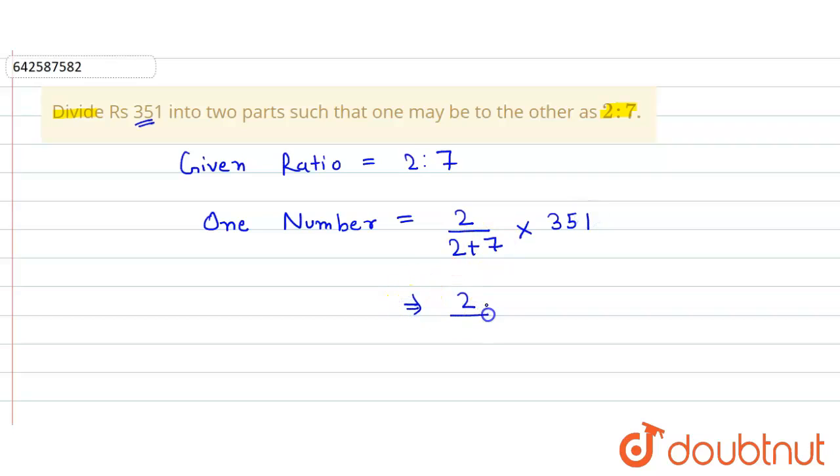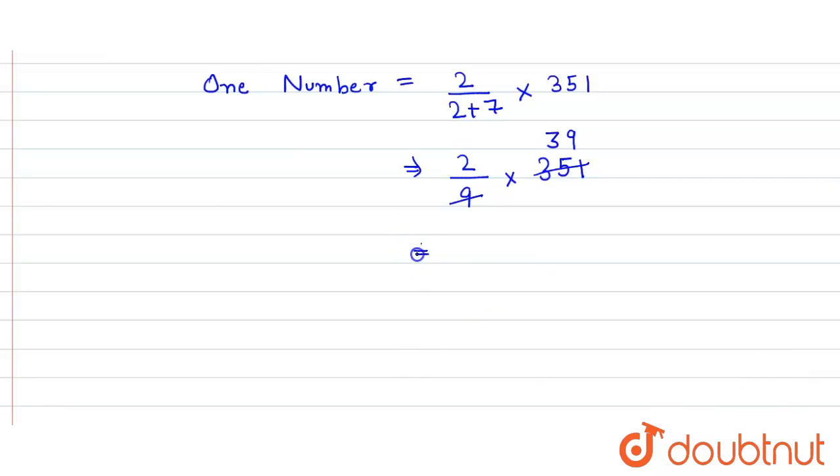So it is two divided by two plus seven equals nine into 351. This nine cancels this 351 and here we get 39. So here we get equals to two into 39, which will be equals to 78.